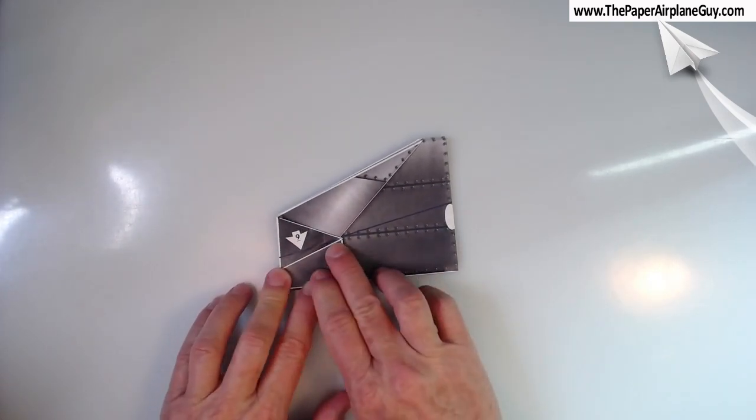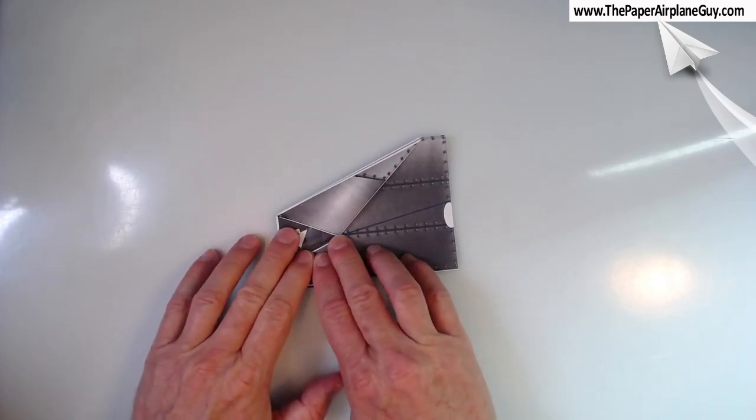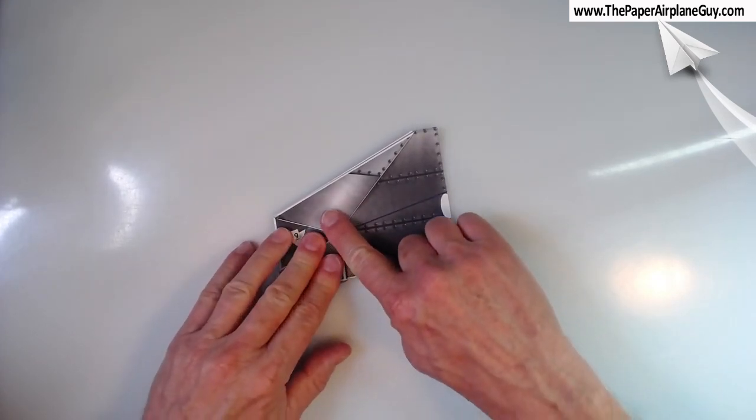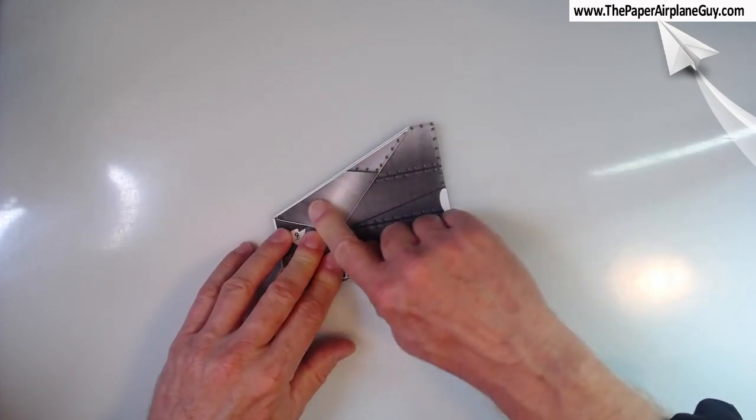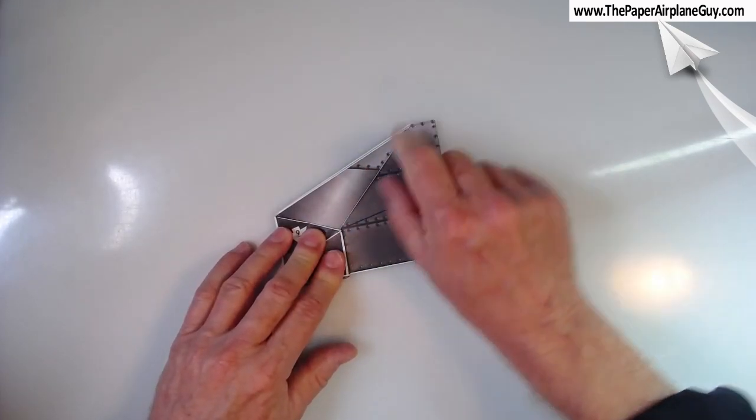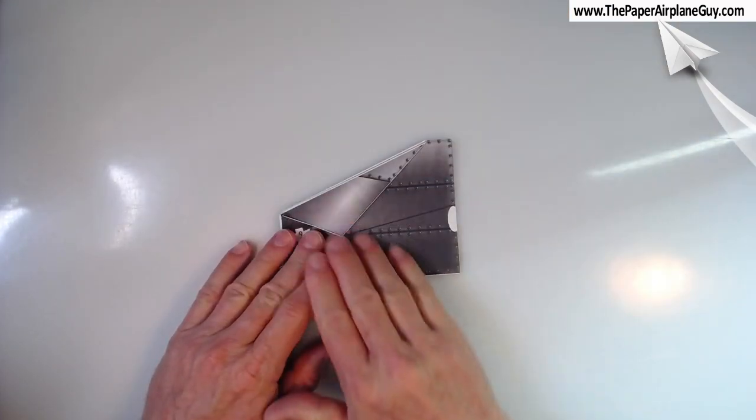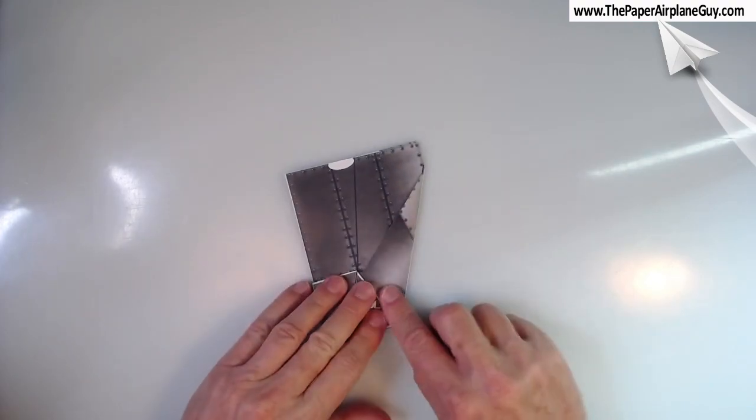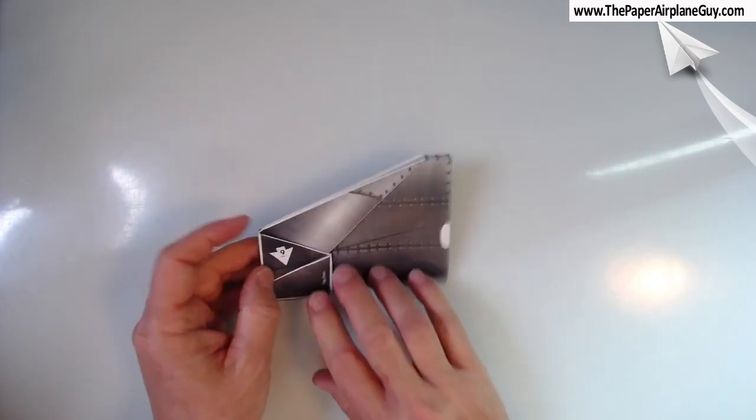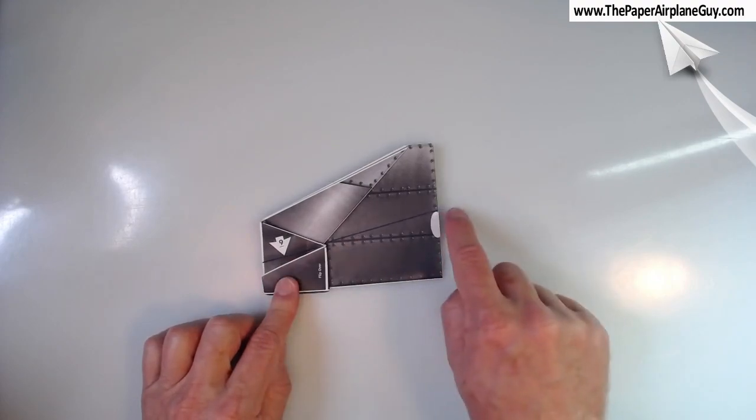Two more folds and we've almost got this pocket rocket completed here. And this has got a little bit of a bubble there. So I'm going to do a sweep up and out, sweeping away from the center of the plane. Flip it over, make sure that this wing is good too.